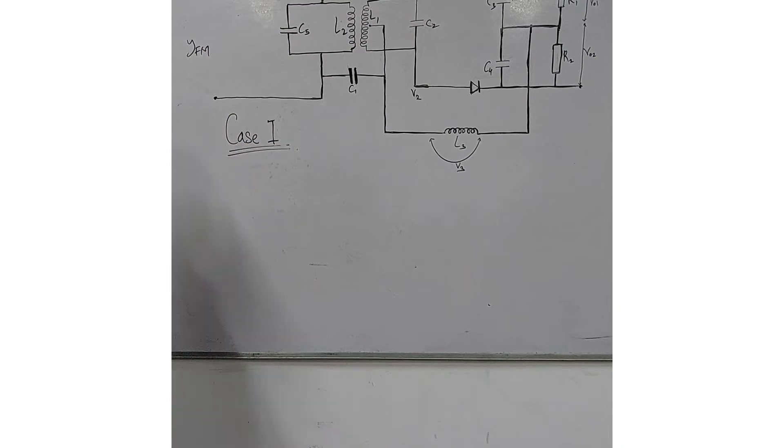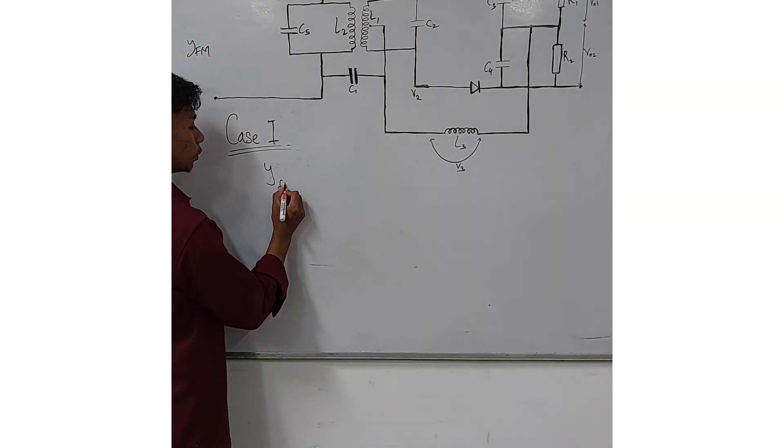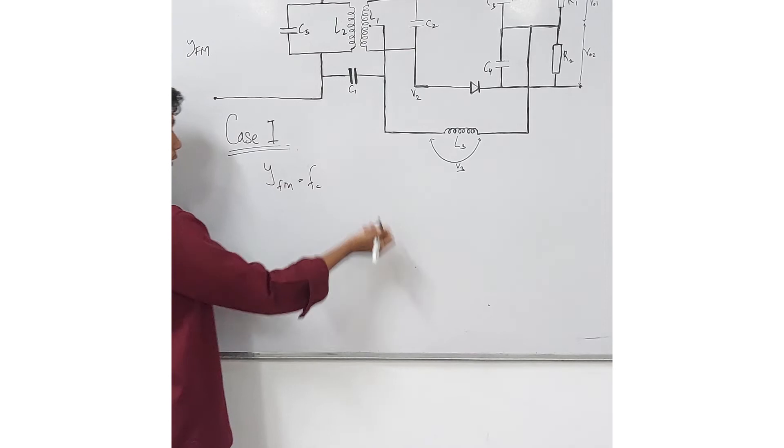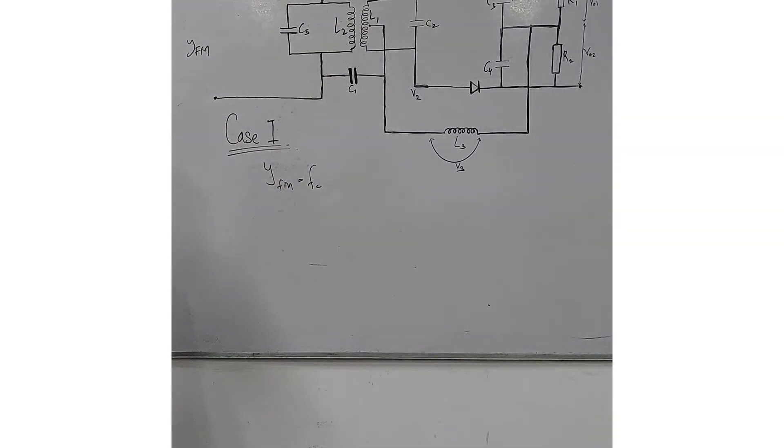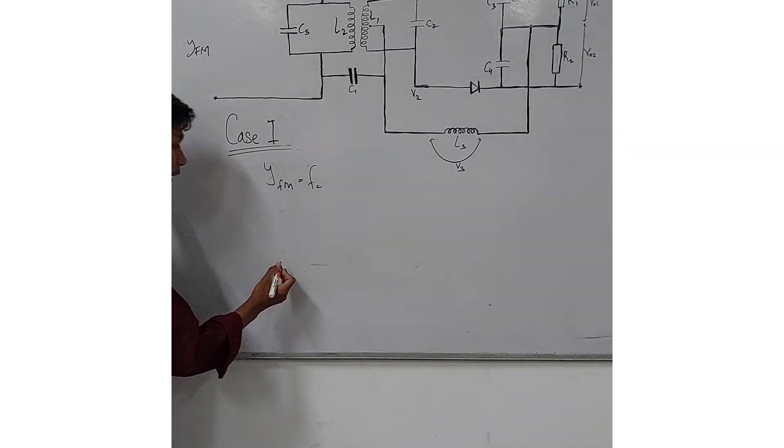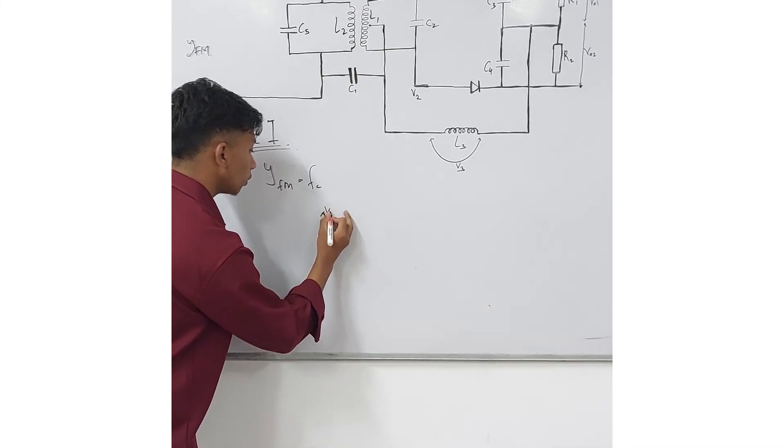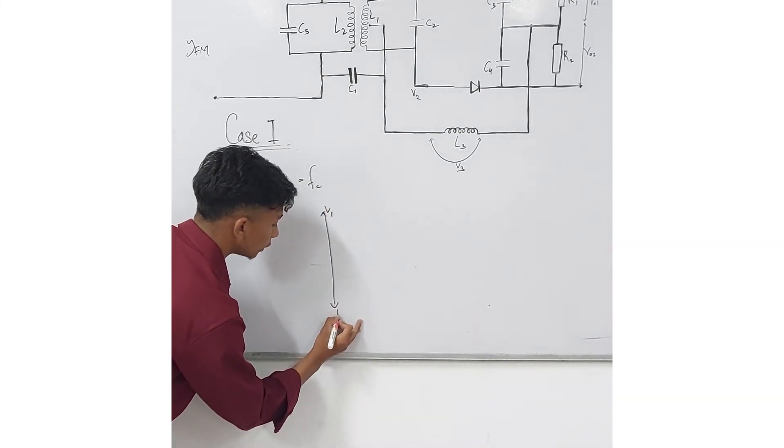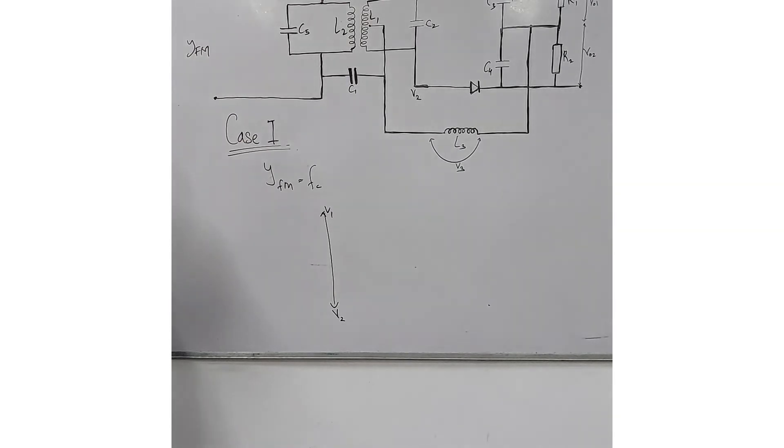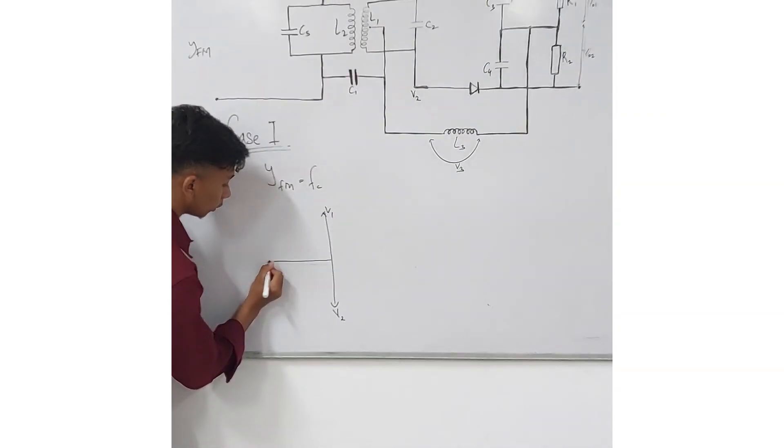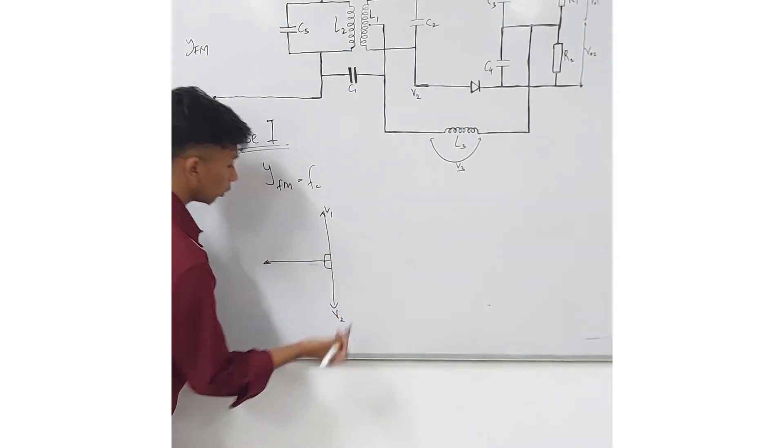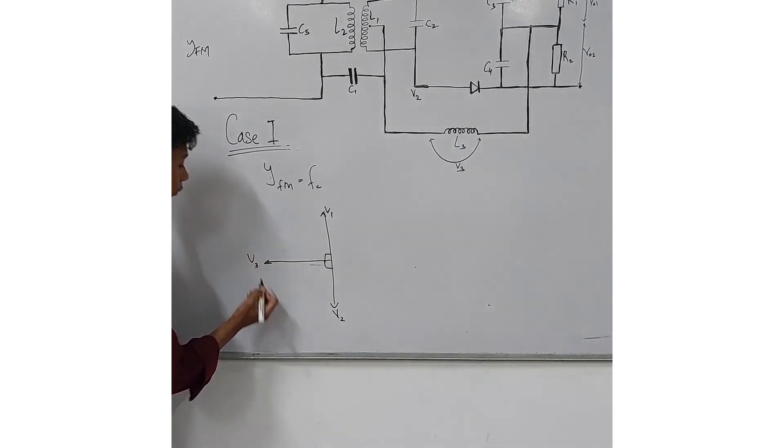Now what will happen if the input frequency is at resonance, that is fc plus delta fc. You can observe that voltage at V1 and V2 will be 180 degrees out of phase. However, voltage V3 will make a 90 degree angle with both V1 and V2.